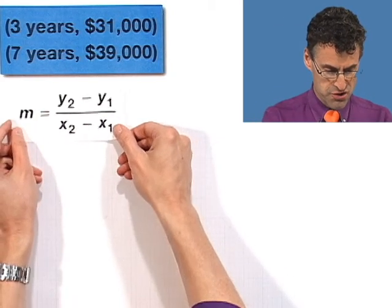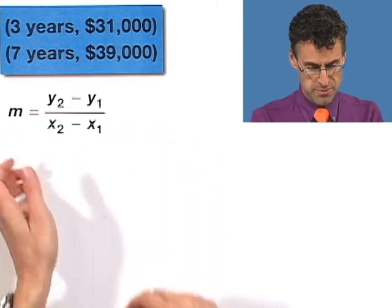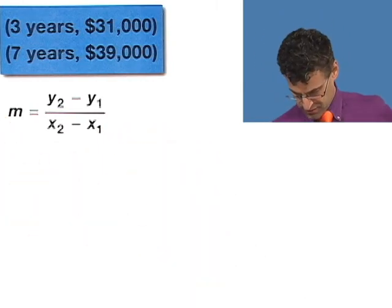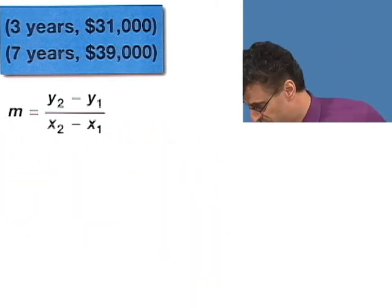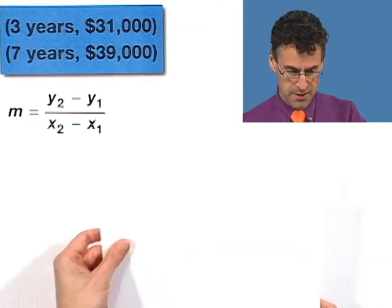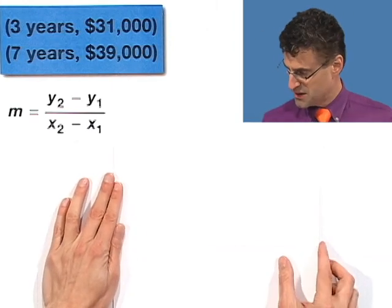And you know how to find slope: it's the change in y over the change in x, or y2 minus y1 divided by x2 minus x1. You know, look, we know this stuff. So let's try to actually see if we can compute some of these things.